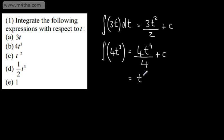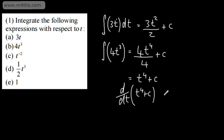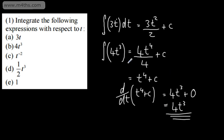For ∫4t³ dt: raise by a power, divide by the new power, and add a constant of integration. The 4s cancel, leaving t⁴ plus c. If you're unsure, verify by differentiating: d/dt of (t⁴ + c) — multiply down by the power giving 4t, drop the power by 1 giving 4t³, plus the derivative of a constant which is 0. So we get 4t³, confirming this is indeed a reverse process, and it's important to always add the constant of integration.